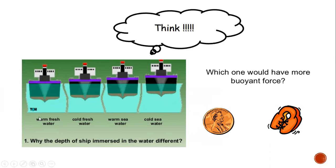Here is something to think about: which has more buoyant force — a coin or a life-saving jacket? You also need to consider this diagram showing the same ship floating in warm fresh water, cold fresh water, warm sea water, and cold sea water. You can see the ship is at different depths in each. Find and explain with reasoning why these ships are at different depths in different types of water. Thank you.